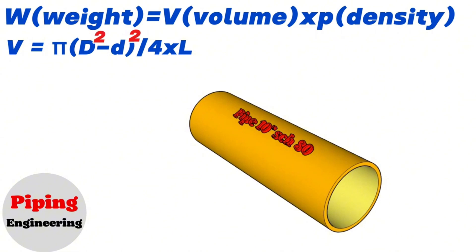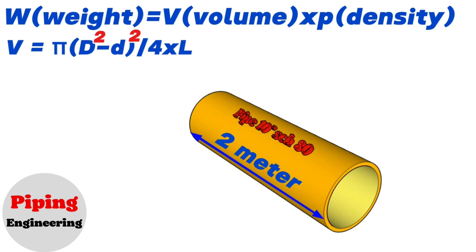We will be explaining the calculations in this video using 10-inch and 16-inch pipe examples. Let's calculate the weight of a 10-inch pipe with a schedule 80 thickness and a length of 2 meters. To estimate the volume of the pipe piece, let's look at the wall thickness of a 10-inch schedule 80 pipe from the steel pipe dimension chart.